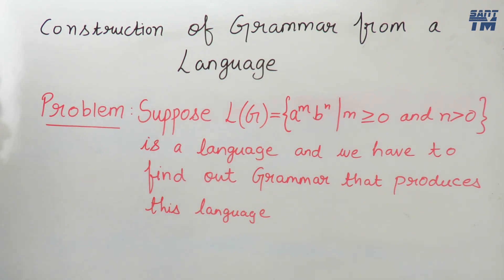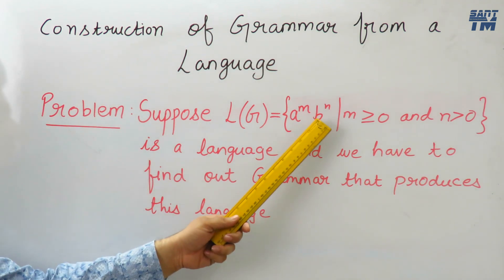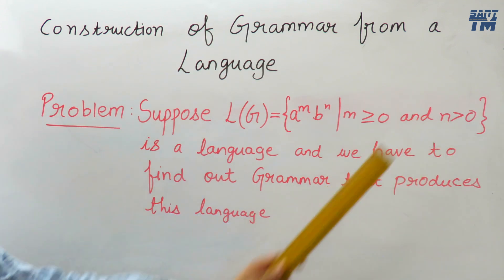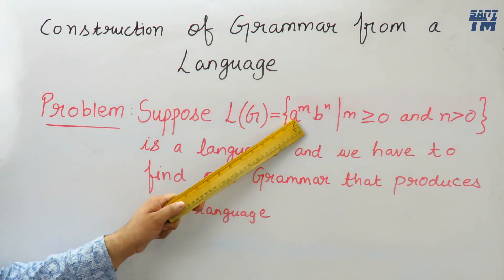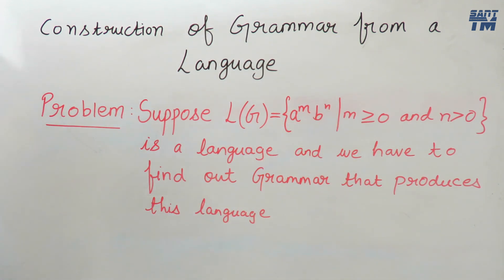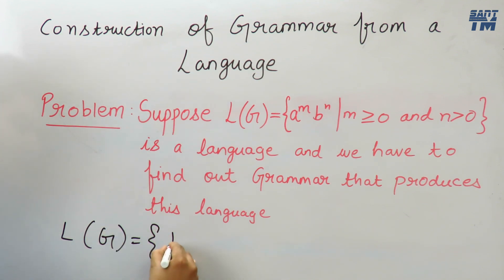The method to find the grammar from a given language is purely a hit and trial method. We know that n is greater than 0, where n is the power of b. So n greater than 0 means in every string there will be at least one b — b will always exist. Whereas a can exist or cannot exist because m is greater than or equal to 0, meaning m can be 0 also.